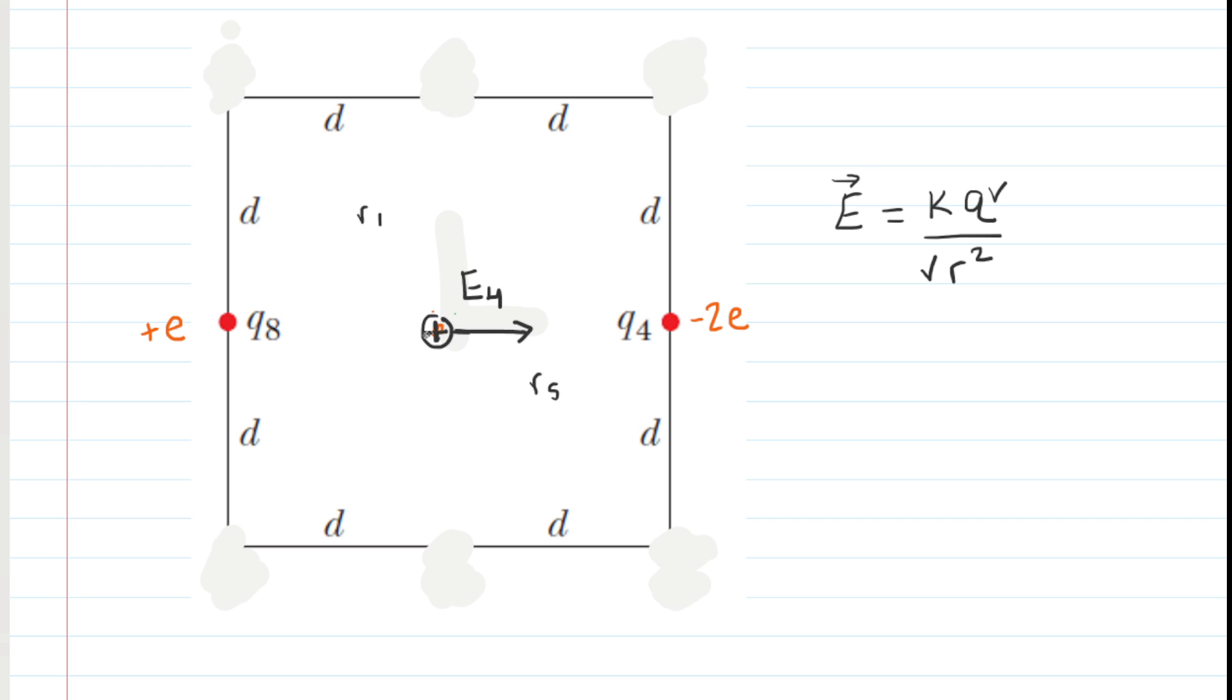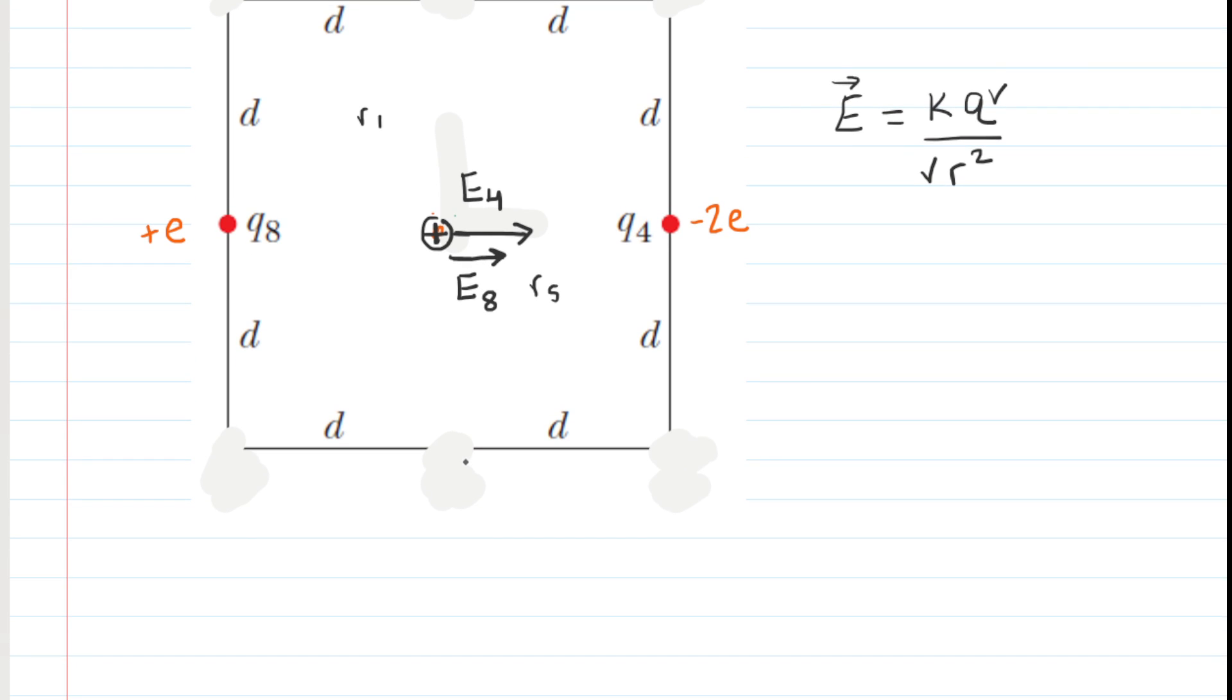Now, similarly, looking at that positive test charge in the center, Q8 is positively charged as well and therefore they would repel one another. So that means that the electric field produced by Q8 also points to the right. We're going to call that E8. So both of those electric fields point to the right, which means in unit vector notation, we can say that the total electric field is going to be E4 plus E8. We're going to add them together because they are vectors pointing in the same direction.